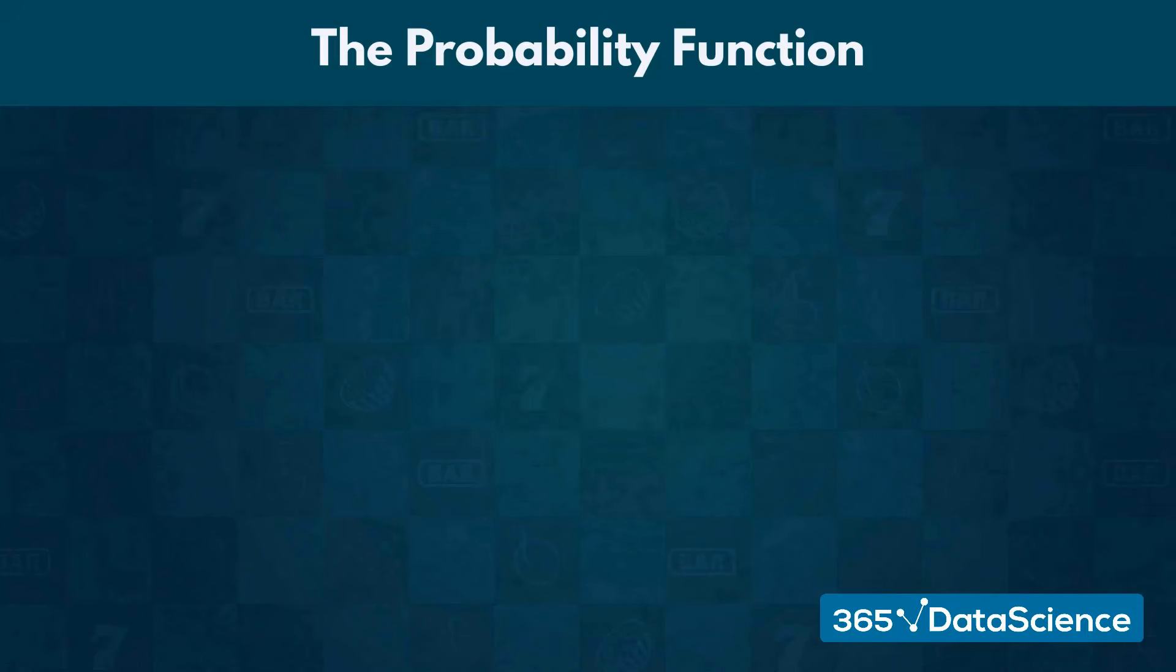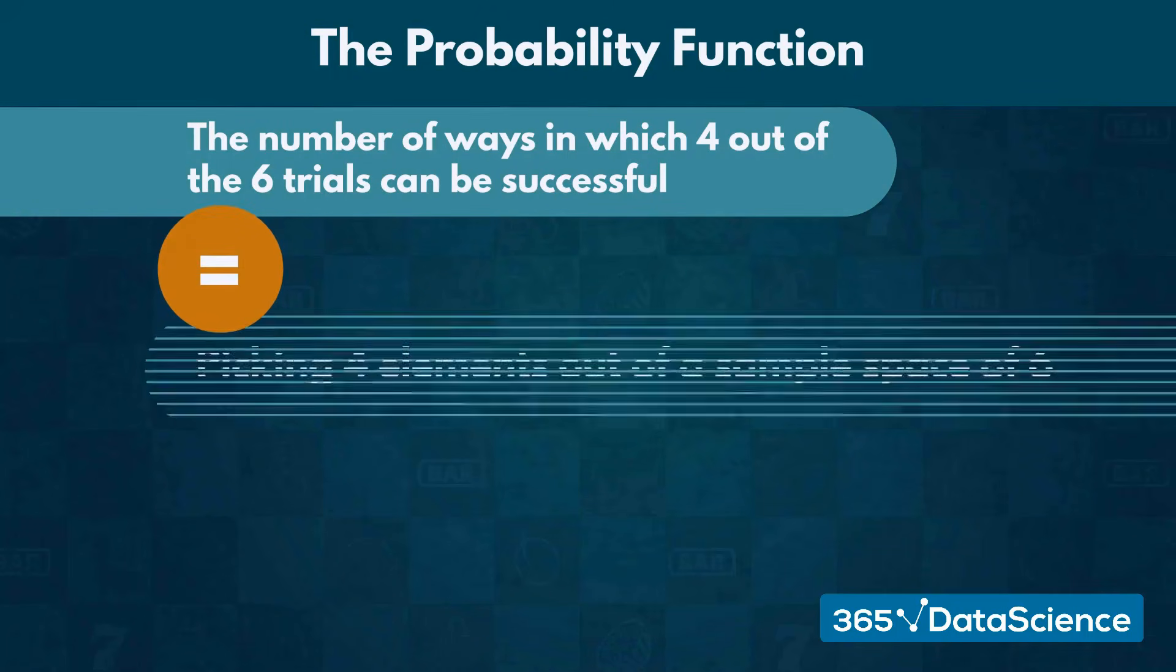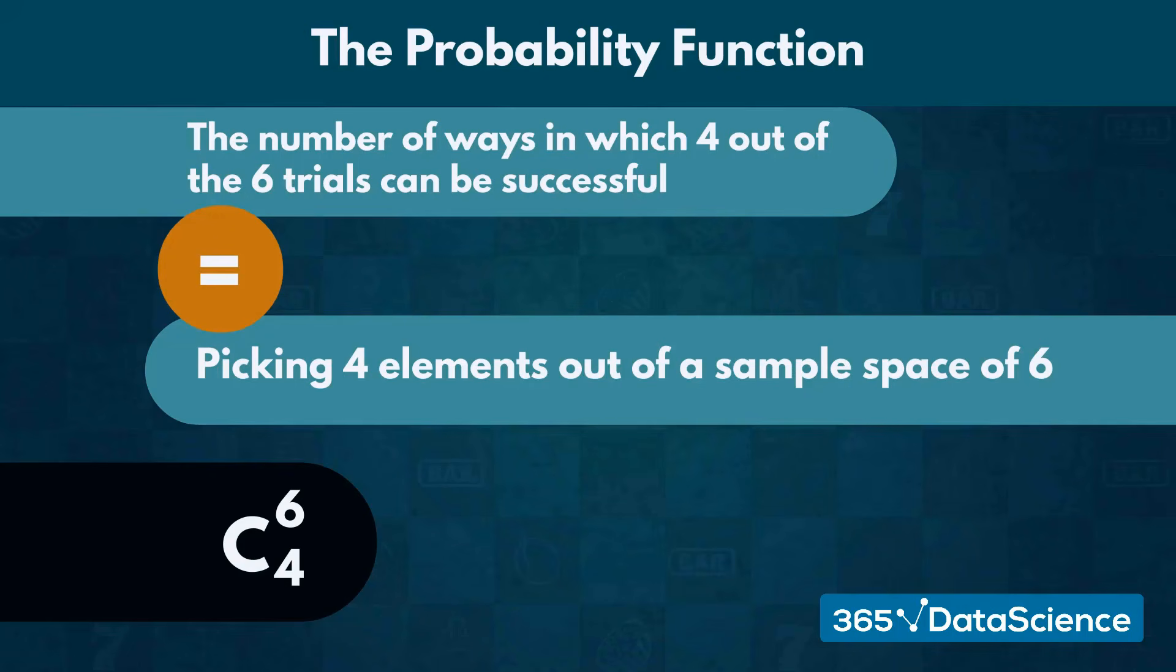For instance, if we wish to find out the number of ways in which 4 out of the 6 trials could be successful, it is the same as picking 4 elements out of a sample space of 6. Now you see why combinatorics are a fundamental part of probability.